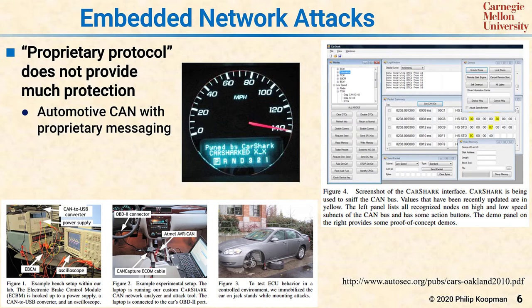A little bit of trial and error generally gets you into the system. Think about it: if there's a message for turning the steering wheel and it's secret, and you turn the steering wheel and only one message type has data changing, you know that's the steering wheel. That kind of approach will get you very far — researchers were able to reprogram the dashboard just by reverse engineering the CAN messages with moderately little effort. If you think your system is secure because you did not tell anyone your message definitions, think again.